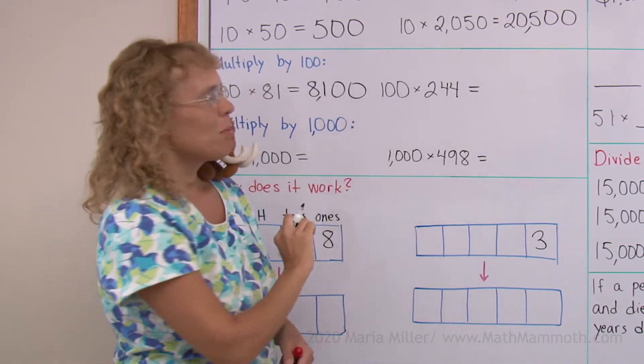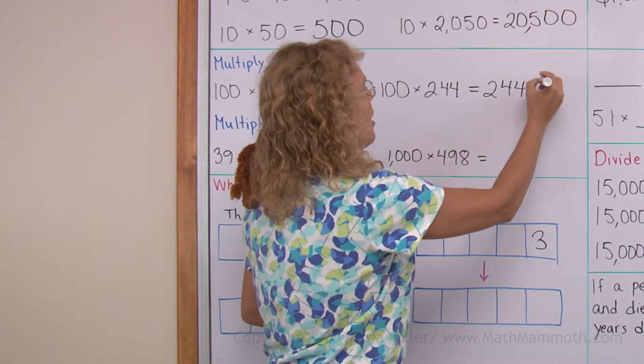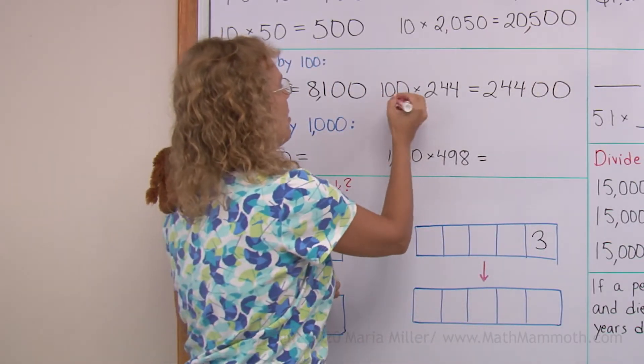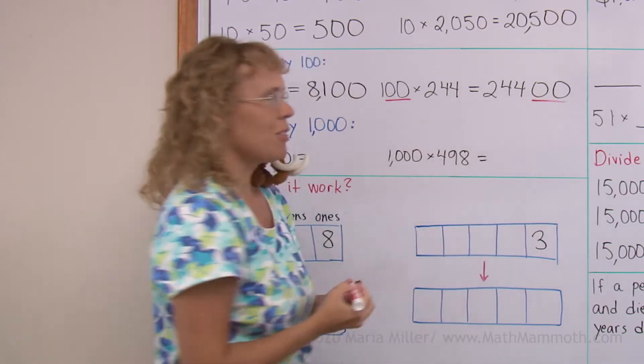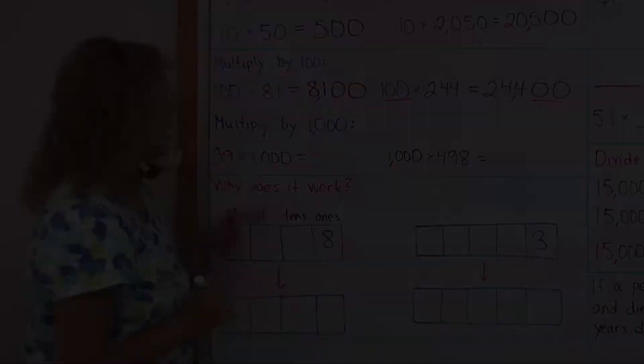And then 100 times 244, write the 244, write two zeros after it. Just like 100 has two zeros, you write two zeros over there. So that is 24,400.